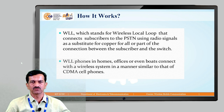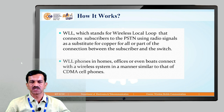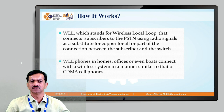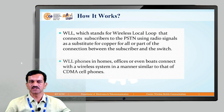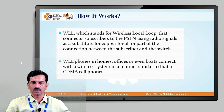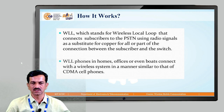How does it work? WLL, which stands for Wireless Local Loop, connects the subscriber to the PSTN — the Public Switched Telephone Network — using radio signals as a substitute for copper wire, for all or part of the connection between the subscriber and the switch. WLL phones in homes connect with the wireless system in a manner similar to CDMA cell phones connecting to a base station — the basics of WLL are like those of a CDMA cell phone.